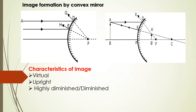Now the convex mirror is always going to be a diverging mirror, as we learned earlier. In the first case, the object is at infinity, so parallel rays are coming and they are still diverging. They appear to diverge from the focus of the convex mirror. My image is going to be here at a point size — it is highly diminished. Since it is a virtual image, it is always going to be upright. So the characteristics will be virtual, upright, and highly diminished.